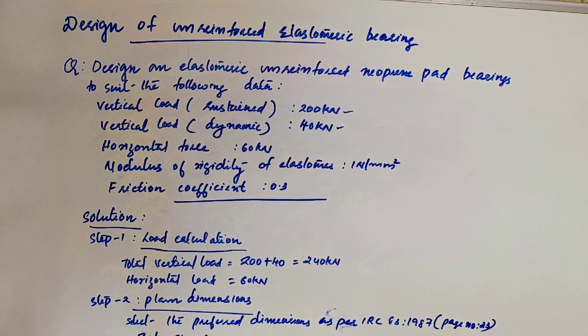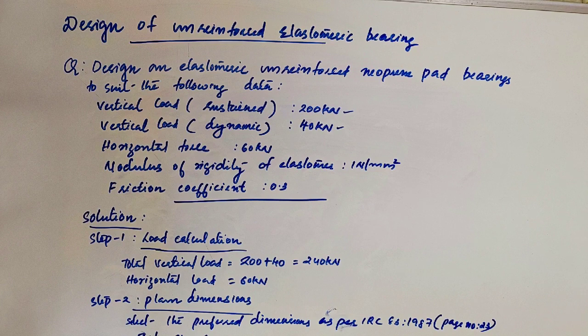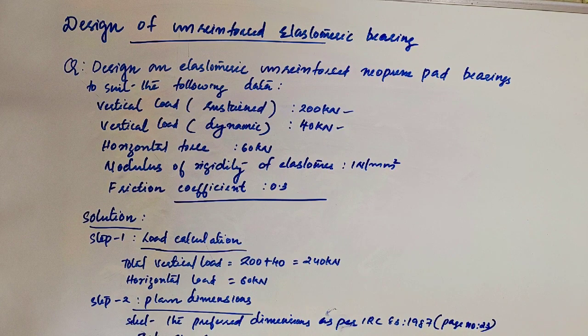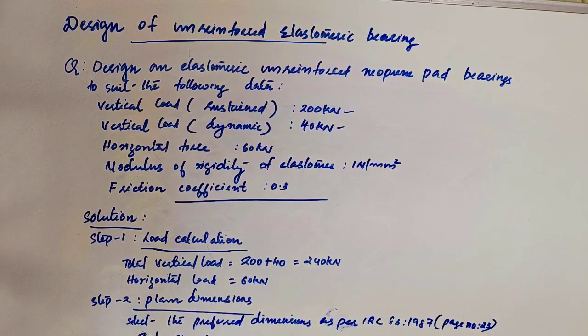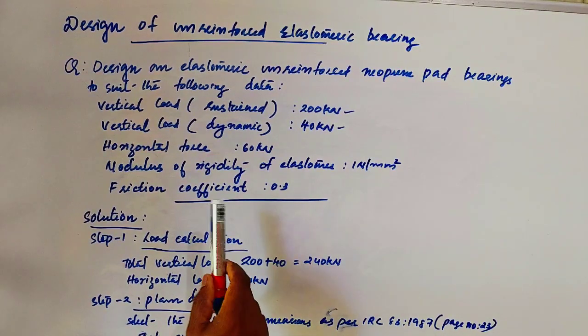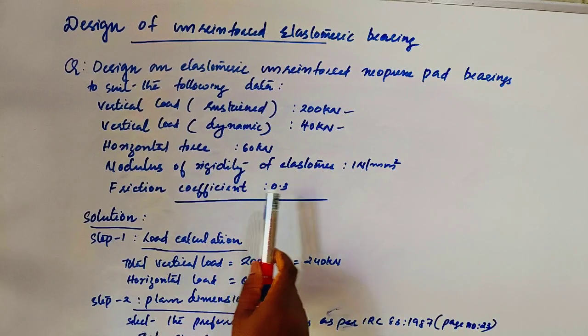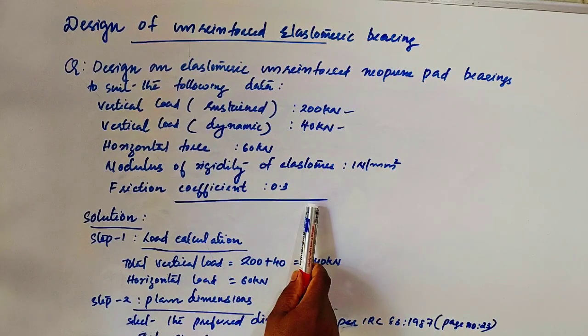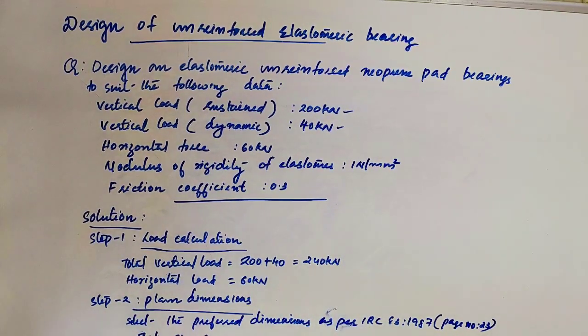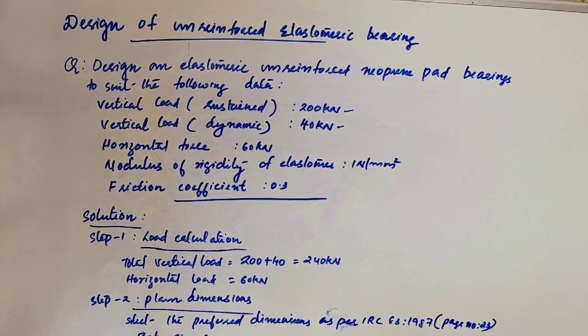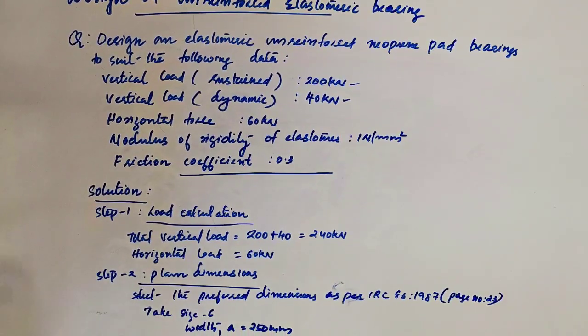First, vertical load sustained 200 kN, vertical load dynamic 40 kN. Then horizontal force 60 kN. Then modulus of elasticity of elastomer 1 N per mm square, friction coefficient 0.3.